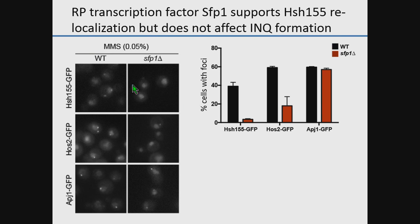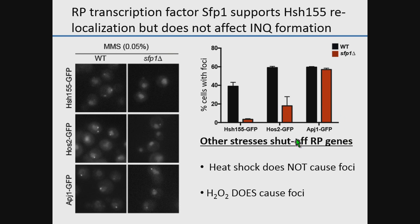We looked at protein aggregate markers in SFP1 mutants. Importantly, when we looked at the chaperone APJ1, SFP1 had no effect — protein aggregates still form. However, when we look at HSH-155, there is a complete abrogation of cells showing these aggregates. Similarly for HSH-2, which also localizes to RP genes. So we still have protein aggregates forming, but in the absence of this transcriptional response or when it's dysregulated, we no longer see localization of the splicing factor.